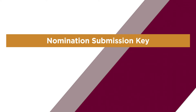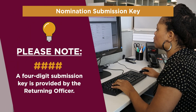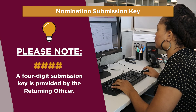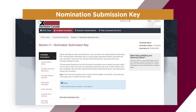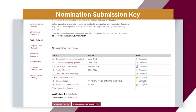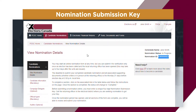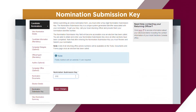To submit the nomination form to Elections Canada, you need a four-digit nomination submission key. The returning officer provides the submission key once the electoral event is underway. To get a key, contact the returning officer for your electoral district. You can get their contact information through the Voter Information Service, accessible via the 'Need Help Contacting Your Returning Officer' box on the right of the screen. Give the returning officer the EN number associated with your nomination — this number is in the top right-hand corner of any page in the nomination form. Then enter the key in the Nomination Submission Key section and click Save Changes.